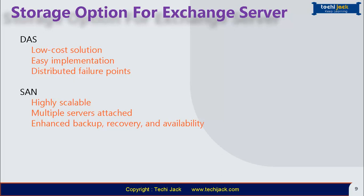For cost-conscious SAN implementations, iSCSI might be a good option because an iSCSI network encapsulates iSCSI commands in TCP/IP packets over standard Ethernet cabling and switches. You should implement this technology only on a dedicated storage network that is 1 gigabit per second or faster.